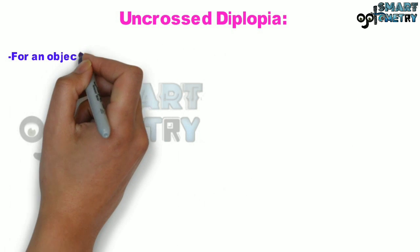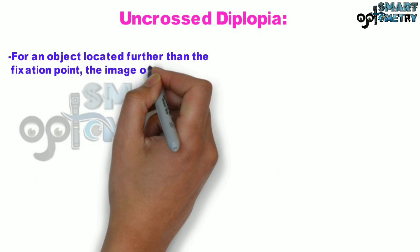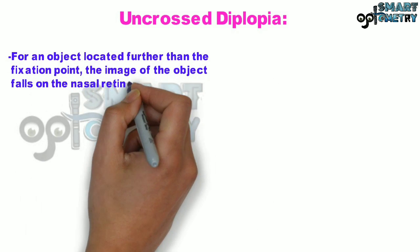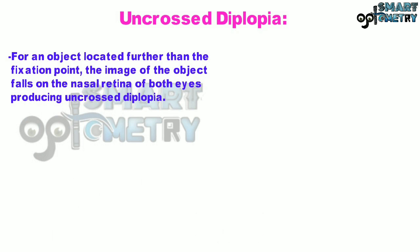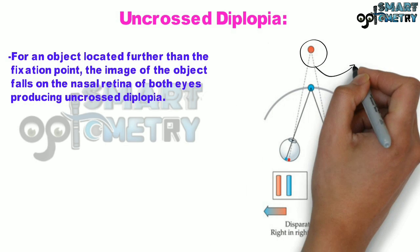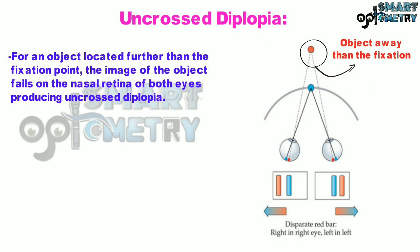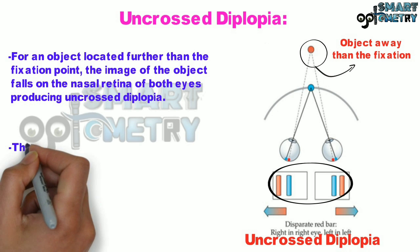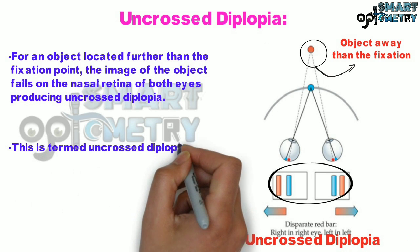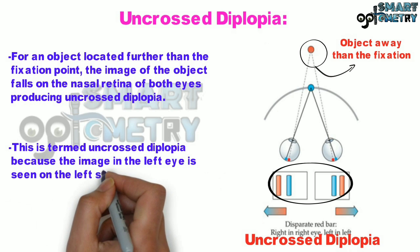For an object located further than the fixation point, the image of the object falls on the nasal retina of both eyes, producing uncrossed diplopia. In the diagram alongside, you can see that the object is further away than the fixation point, giving rise to uncrossed diplopia. This is termed uncrossed diplopia because the image in the left eye is seen on the left side.